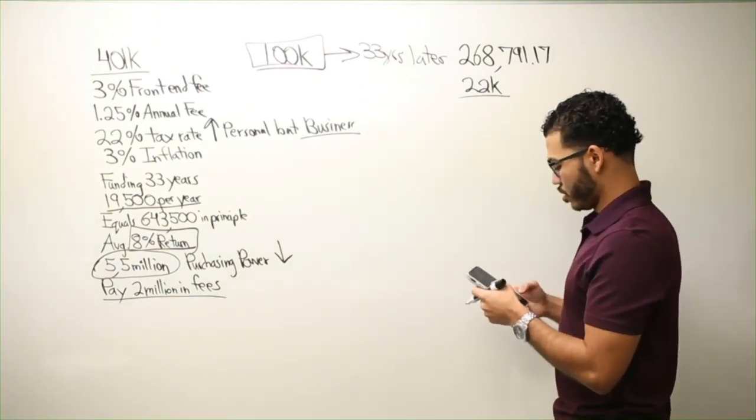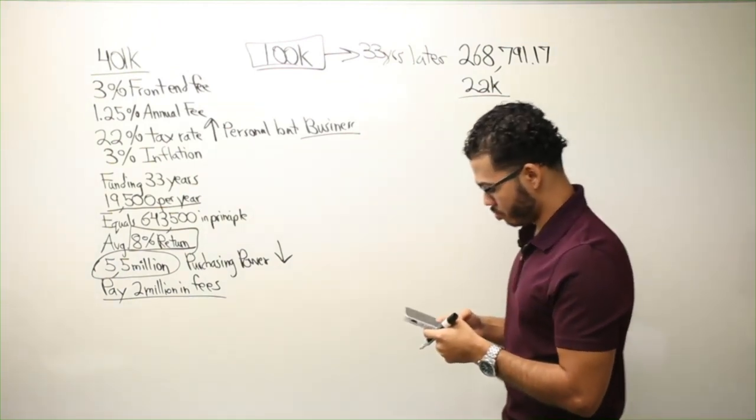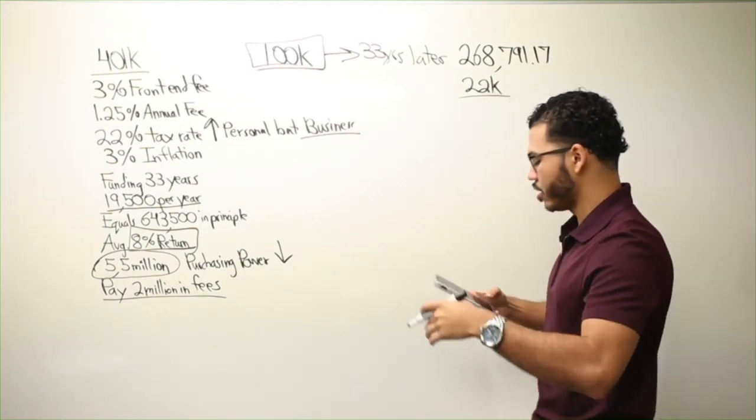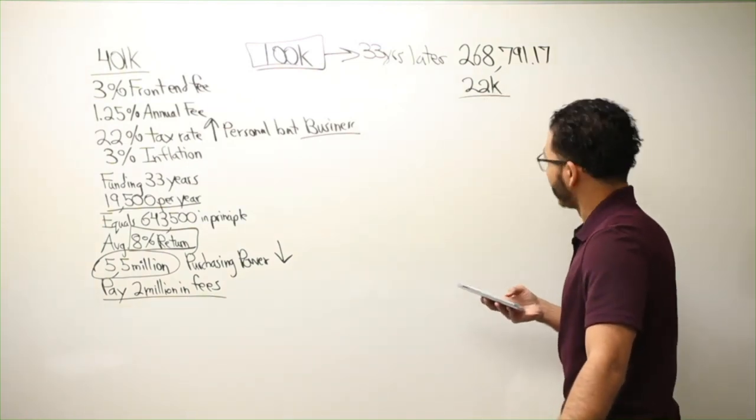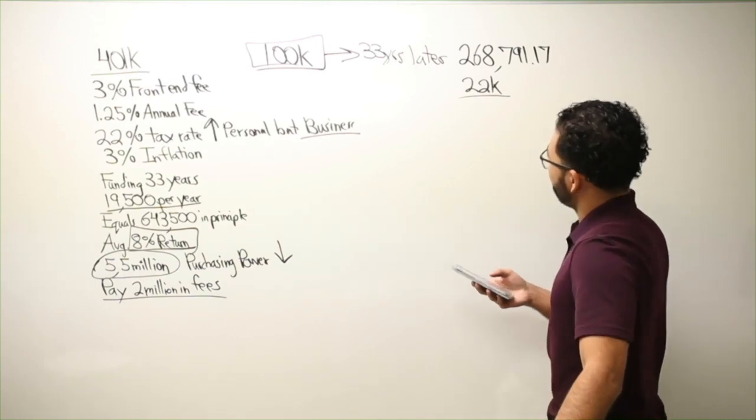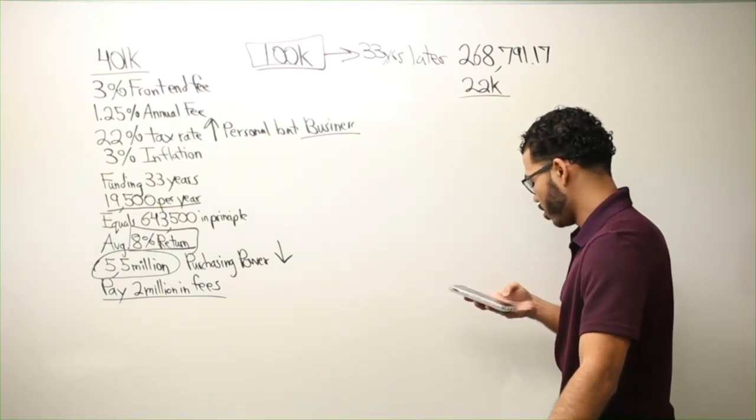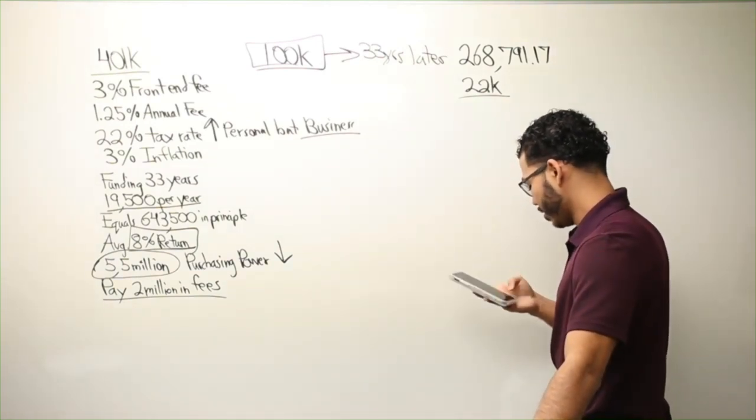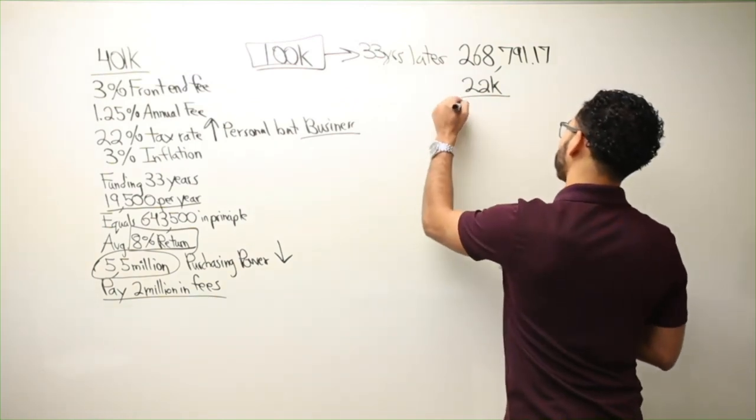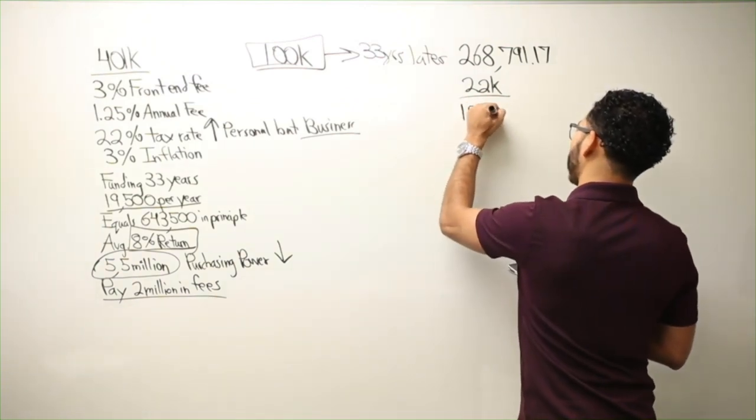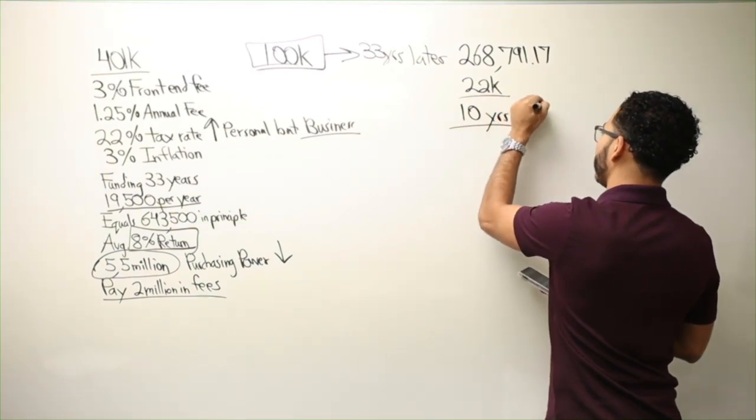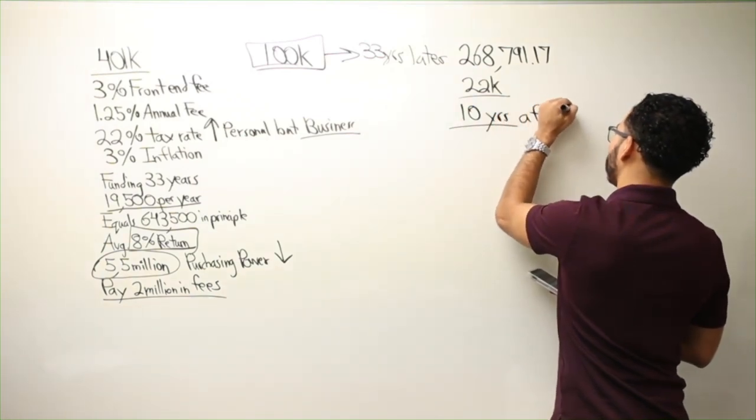So what is it? So if I got, say, $2.8 million after all that money, divided by $268,791.17, my money would last me 10 years after 59.